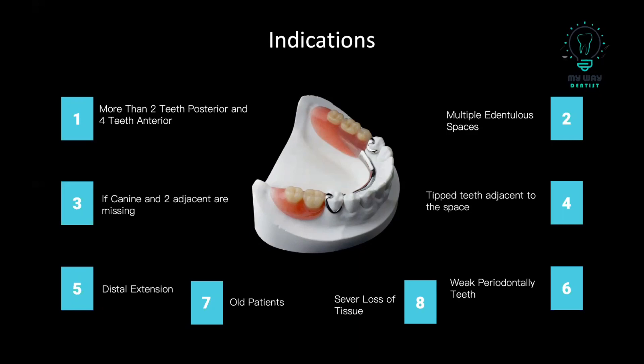Also, when you have tipped teeth that prevent you from doing the preparation, you can go for RPD. Again, as discussed, weak periodontally compromised teeth and severe loss of tissue and bone are indications for RPD, because with bone loss, the buccolingual position of teeth cannot be obtained the same way as with fixed partial denture, but can be achieved with RPD. Finally, elderly patients, because they have lower expectations and it is better for their overall health to go with an RPD.